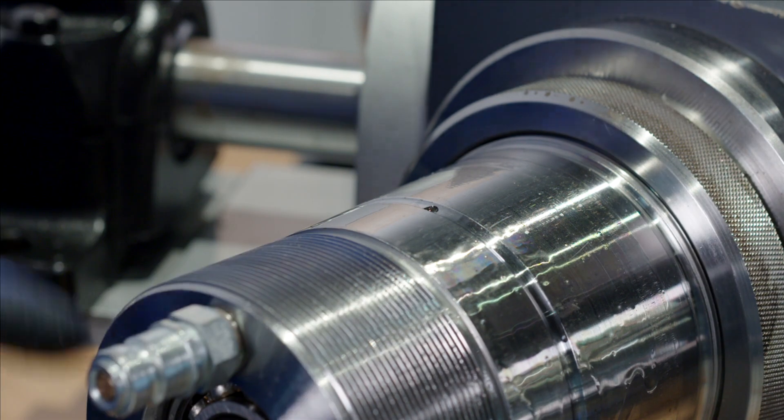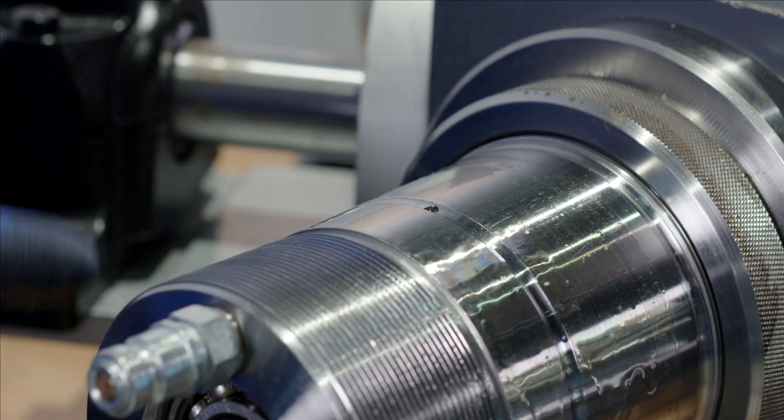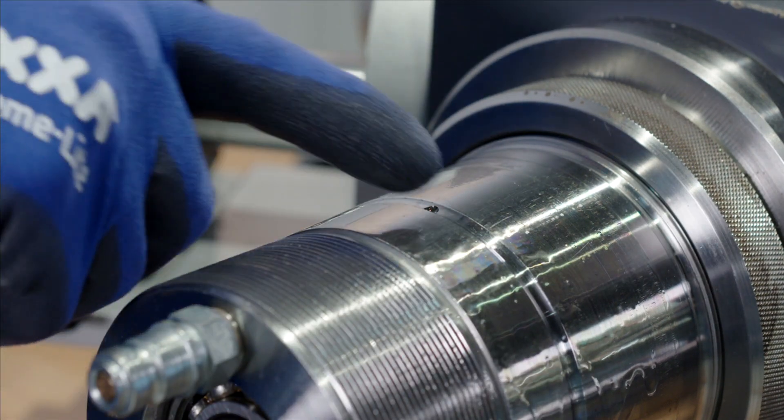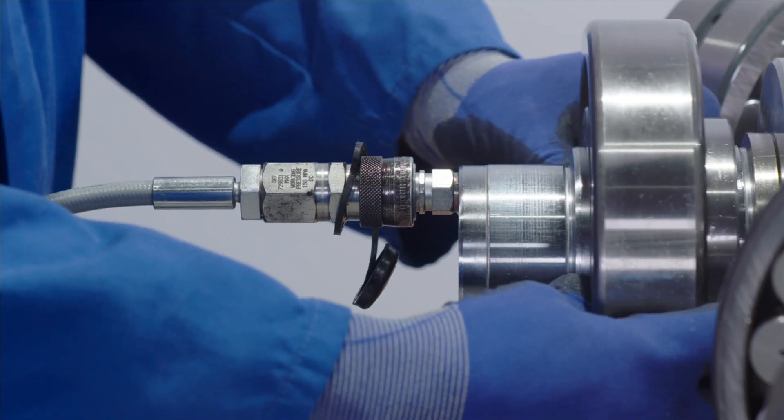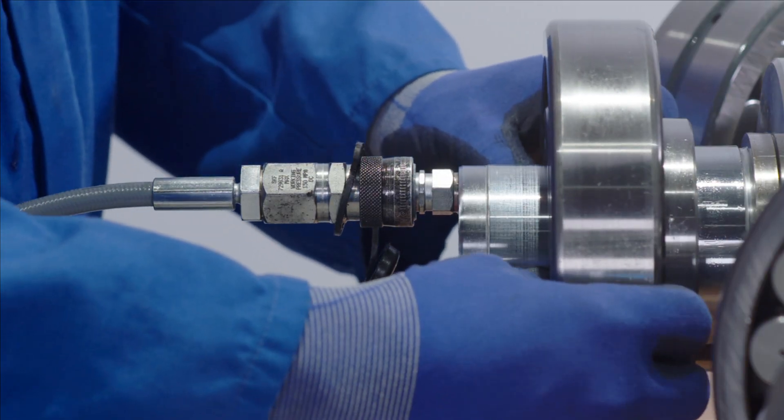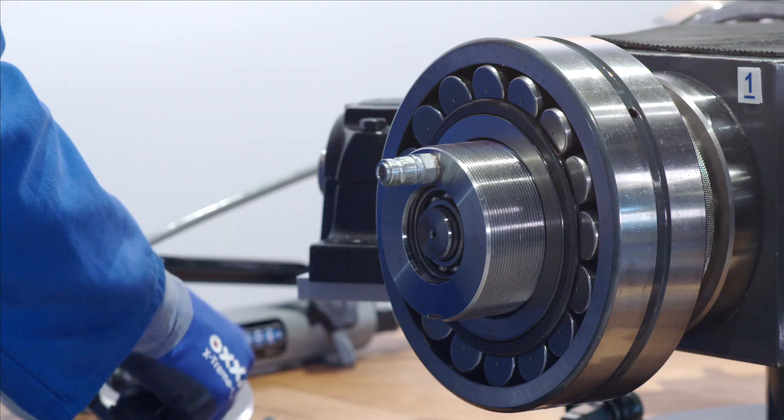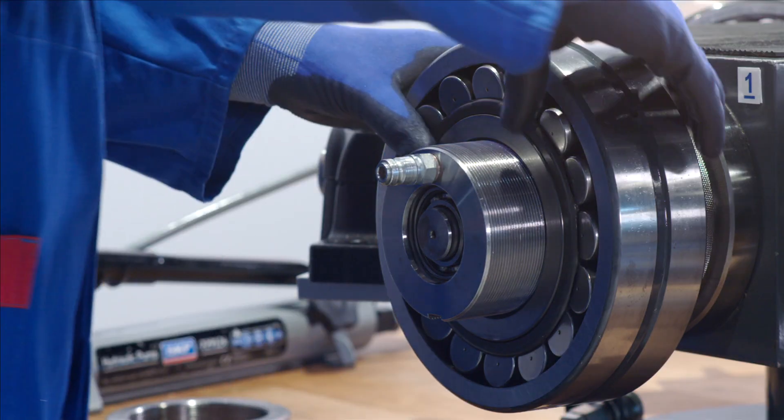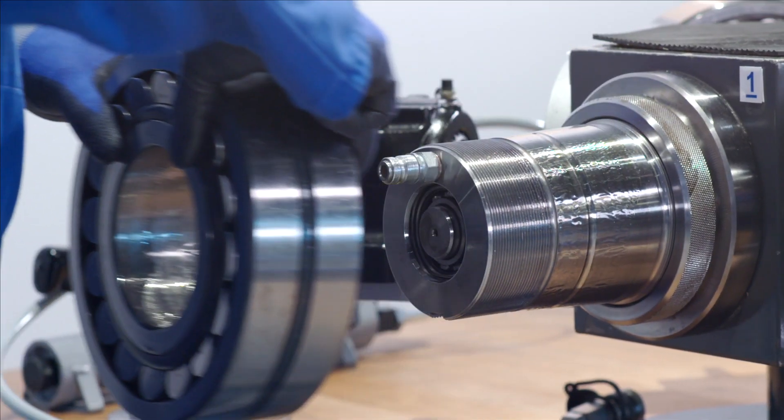The SKF oil injection method uses a thin oil film to separate surfaces, allowing bearings and other components with a tight interference fit to be easily removed in a safe, controllable and rapid manner.